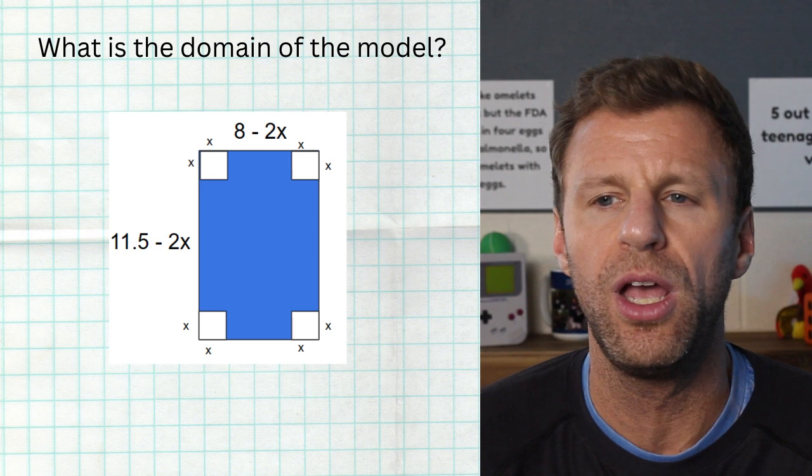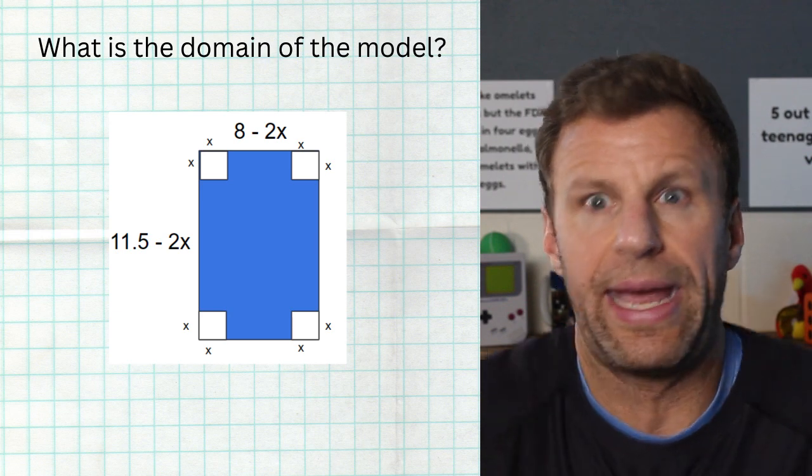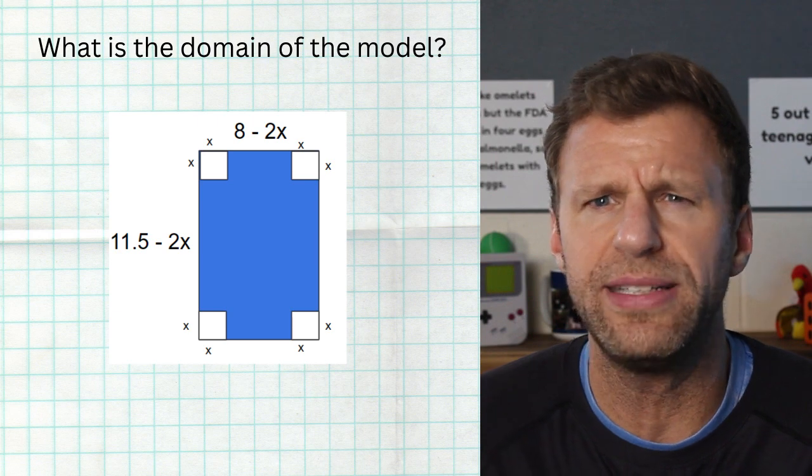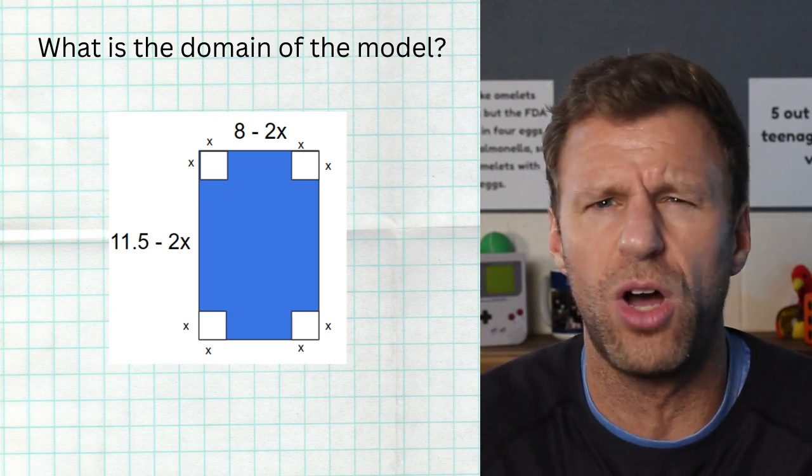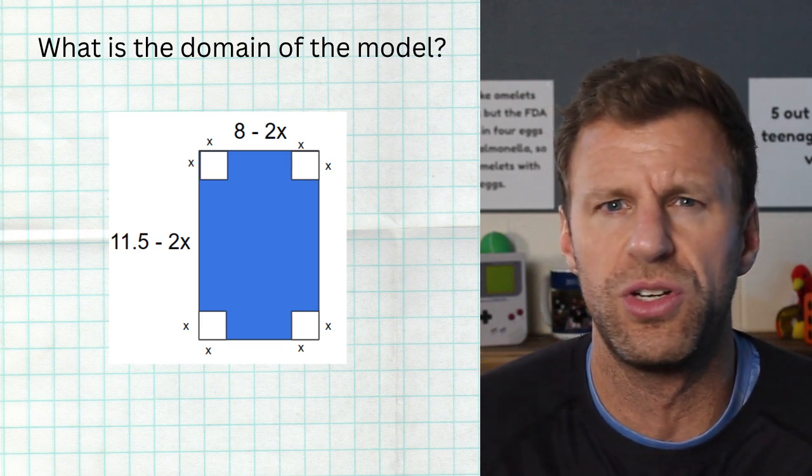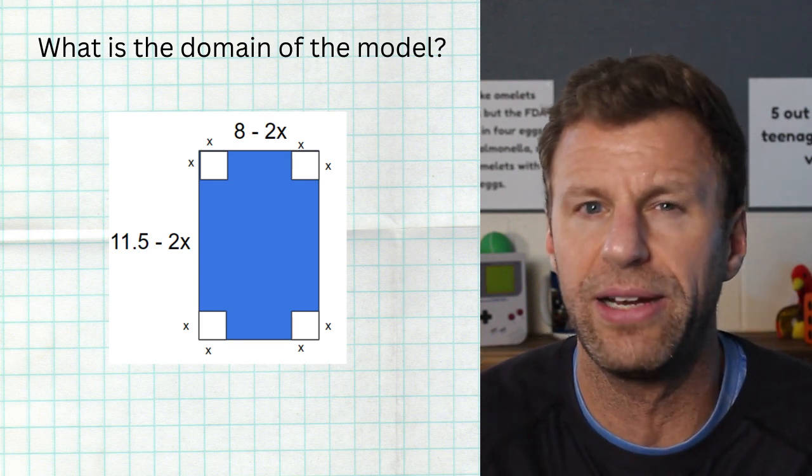So what's the lowest we could cut out? Well, you first say I can't cut out negative amount. That's impossible. I guess you could cut nothing, but then you wouldn't have a box. If I don't cut anything out of the edges, then I just have a flat piece of paper. I don't even have any volume to it because there is literally no height. If there's no height, there's no volume.